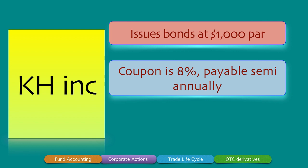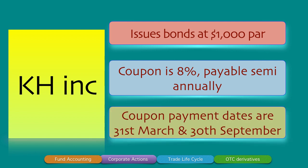The coupon paid by KH Inc is a fixed rate coupon of 8%. This is mentioned in the indenture, and even if 'p.a.' is not explicitly stated, it still means 8% per annum. This coupon is payable semi-annually, with coupon payment dates on 31st March and 30th September. Please remember to pay attention to whether it's 180 or 181 days as the six-month period between the two coupon payment dates, because that could result in a few dollars loss — a cost for the seller of the bond.